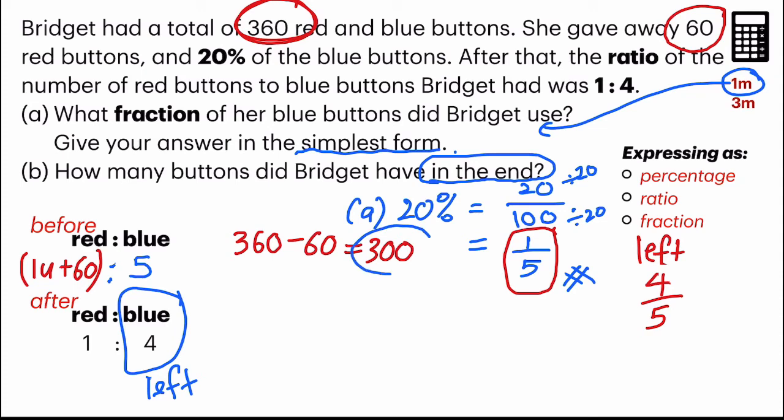And this 300 right here refers to 5 units of blue buttons and 1 unit of red buttons. Because remember, just now I have already subtracted the 60.